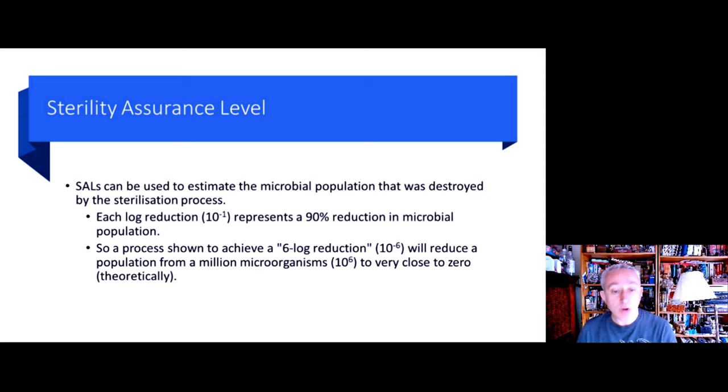With the sterility assurance level, it can be used to estimate the microbial population that was theoretically destroyed by the sterilization process. We can assess this because microorganisms are destroyed in a linear manner. We know that each logarithmic reduction represents a 90% reduction of the microbial population. So when we define sterility or sterilization as achieving a 6 log reduction, then this is what we're using to describe the elimination of a million microorganisms to a value close to zero theoretically.